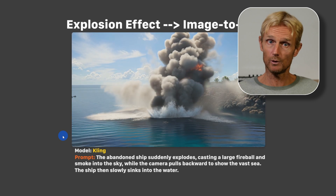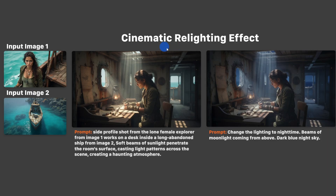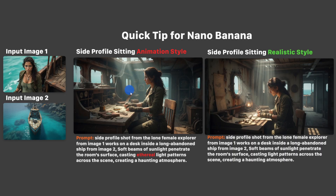The cinematic relighting effect is great for changing a daylight scene into a night scene. I used two images with a prompt to create the base image, then used the relighting prompt: 'change the lighting to nighttime, beams of moonlight coming from above, dark blue night sky.' A quick Nano Banana tip: if your image turns out in an animation style instead of realistic, look through your prompt for trigger words — in this case 'ethereal' was the culprit. Removing it gave a very realistic result.